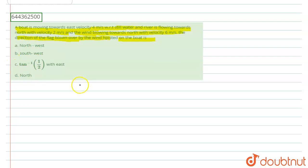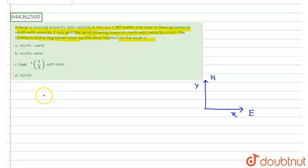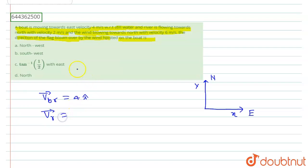In this question, the velocity of the boat with respect to the river is given as 4 meters per second. Let us consider the east direction as the x-axis and the north direction as the y-axis. So the velocity of the boat with respect to the river equals 4i, and the velocity of the river, which is in the north direction, equals 2j.